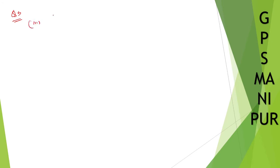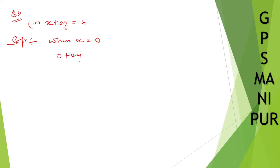Now we are doing question number 3, exercise 4.1. We have x plus 2y is equal to 6. When x is equal to 0, so 0 plus 2y is equal to 6, y is equal to 6 divided by 2, which is equal to 3. So therefore x is equal to 0, y will be 3.